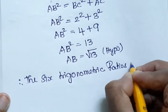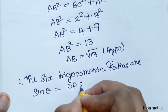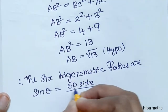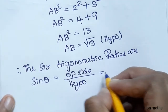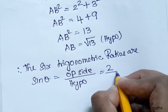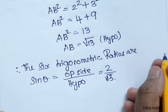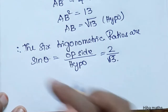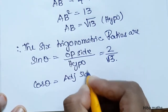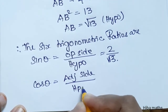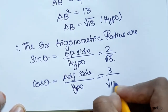The trigonometric ratios are: sin A is equal to opposite side by hypotenuse — opposite side is 2, hypotenuse is root 13. Cos A is equal to adjacent side by hypotenuse — adjacent side is 3, hypotenuse is root 13.